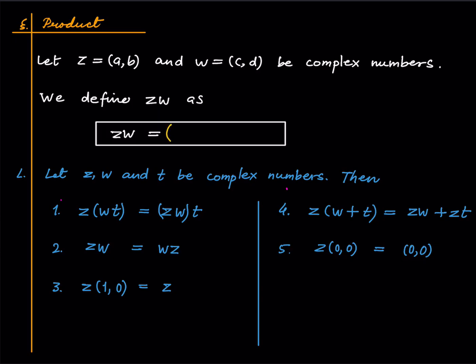Z times W is defined as (ac minus bd) comma (bc plus ad). This seems to come out of nowhere, and that is fine — I accept that it seems completely arbitrary. Why not just multiply coordinate-wise? Why not define it as ac comma bd? Well, the goal of the construction of complex numbers is to be able to solve algebraic equations which are not solvable in real numbers. If you define coordinate-wise multiplication you will see that it does not work out.